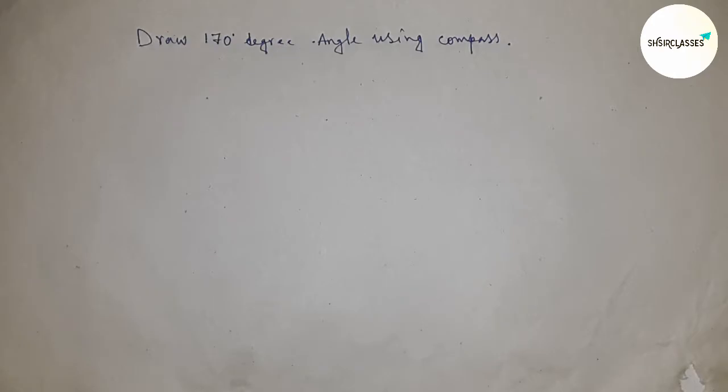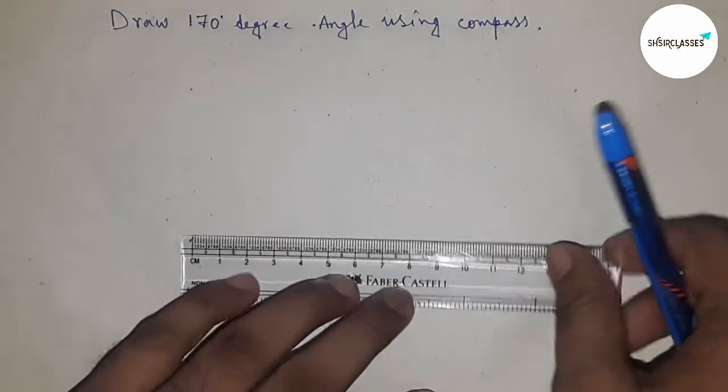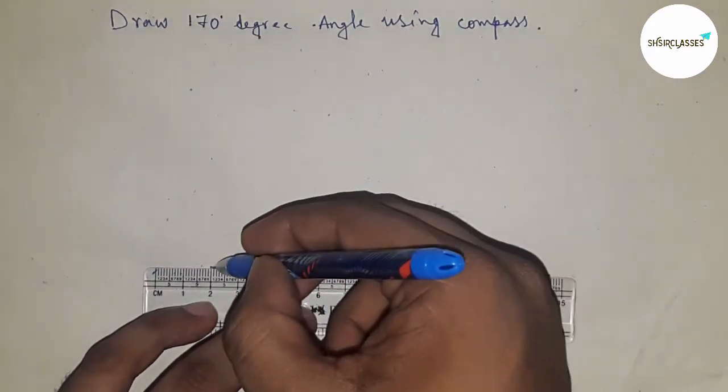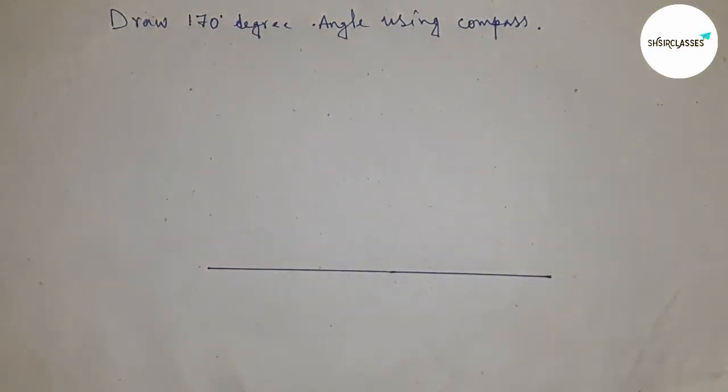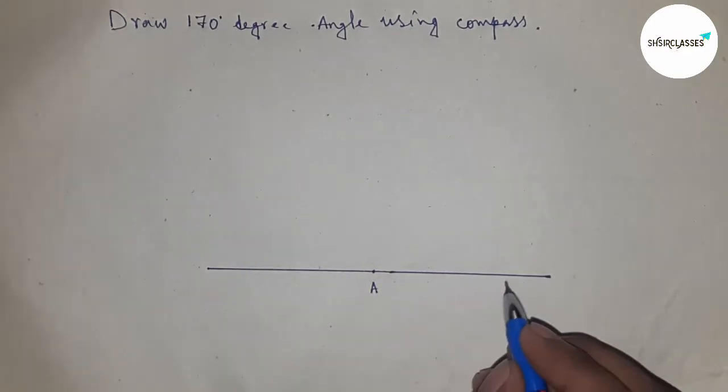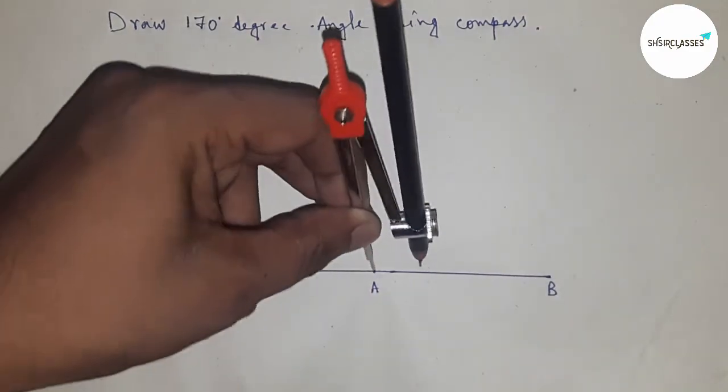First of all, drawing a line of any length here. Taking a point here, so this is point A and this is point B. Next, having to construct the angle on point A.